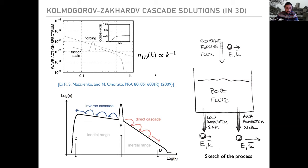We did simulations long ago while I was doing my PhD in 2009 in this regime. We found that if you introduce some kind of friction or dissipative scales at large scales, you can build these types of cascades, and they look in the spectrum like something proportional to what you would expect from the Kolmogorov-Zakharov solution — though the simulations are quite challenging in 3D.